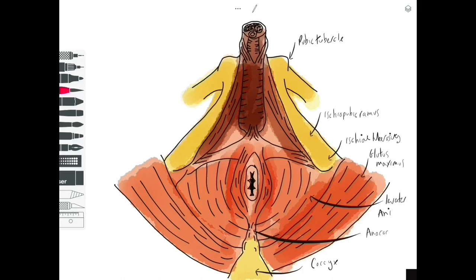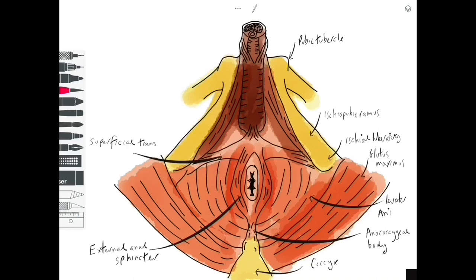Joining the anal aperture with the coccyx is a ligamentous structure called the anococcygeal body, and surrounding the anal aperture we have a sphincter called the external anal sphincter. Running across the midline of the diamond-shaped perineum we have an important muscle called the superficial transverse perineal muscle. This separates the diamond into two triangles: a posterior anal triangle and an anterior urogenital triangle.